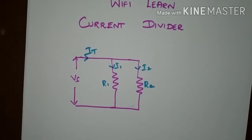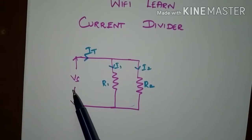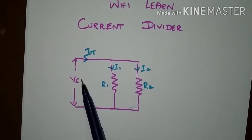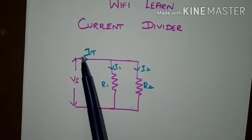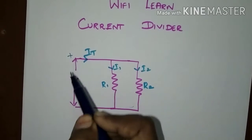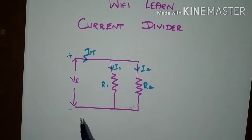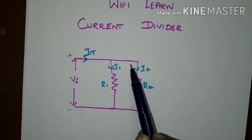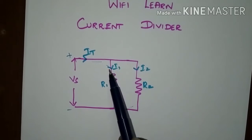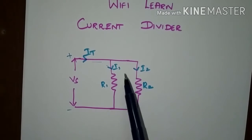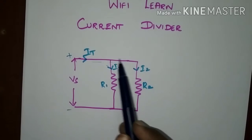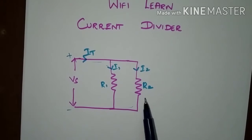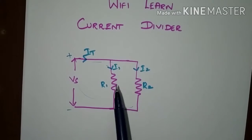In the current divider or parallel circuit, the source supplies the voltage and the current starts to flow from the positive terminal to the negative terminal. The current will divide according to the parallel paths connected in the circuit. If there are multiple parallel paths, the current divides according to the number of paths present.